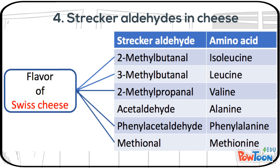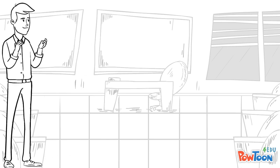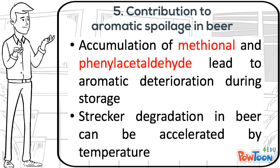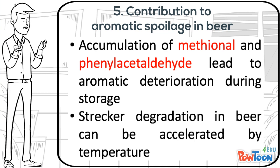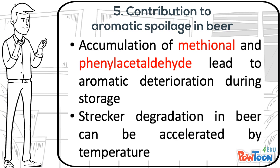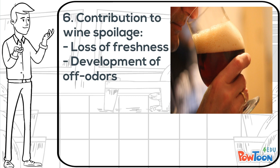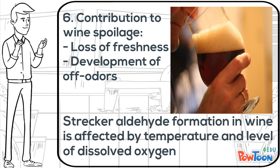Besides contributing to the flavor of dairy products, Strecker aldehydes also contribute to aromatic spoilage in alcoholic beverages. The accumulation of methionol and phenylacetaldehyde in beer during storage can lead to aromatic deterioration. Strecker degradation in beer can be accelerated by temperature, so the higher storage temperature will result in faster Strecker degradation. To increase shelf life of beer, the storage temperature should be controlled. Strecker aldehydes were also found in wine, contributing to spoilage by decreasing freshness and inducing off-odor development. Their formation in wine is affected by temperature and the level of dissolved oxygen.